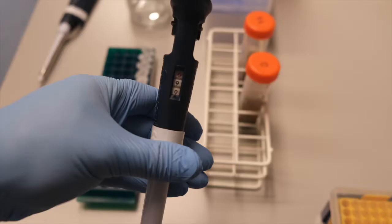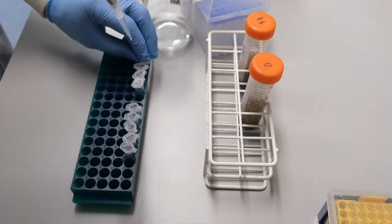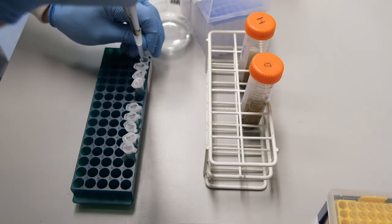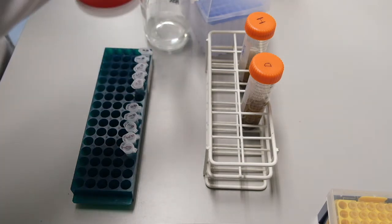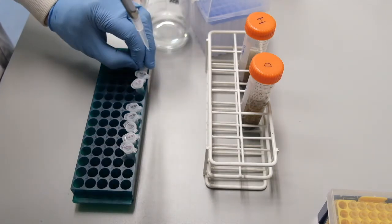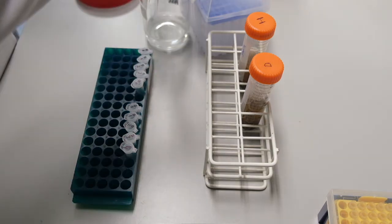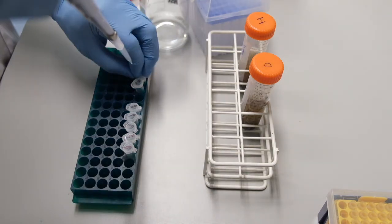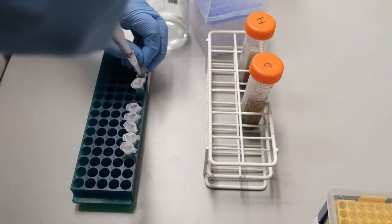We start by labeling all our tubes and putting 900 microliters of ringer solution into each of our dilution tubes. For each soil sample I have labeled five tubes. Four tubes for the dilutions get 900 microliters each of ringer solution. The extra tube is going to have the undiluted soil sample.